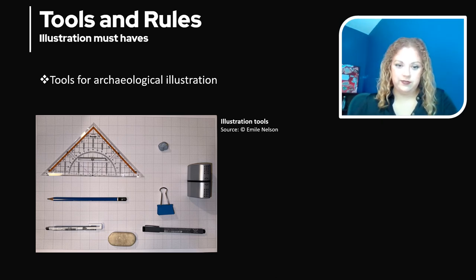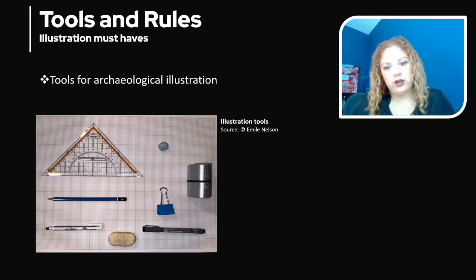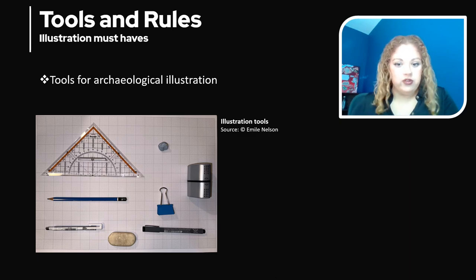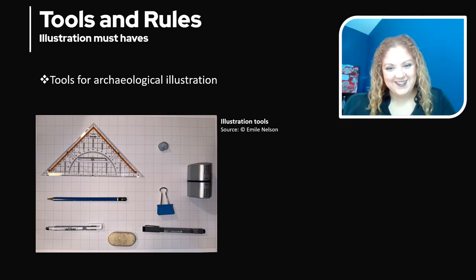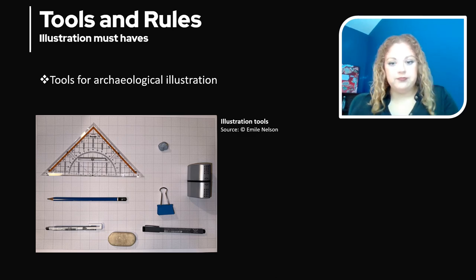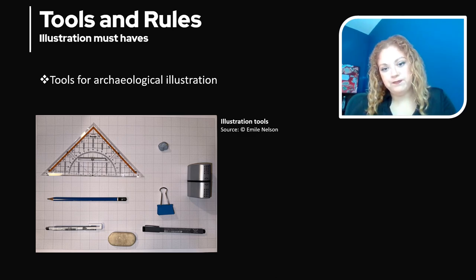Tools for archaeological illustration. Up here in the left corner, I have what is called a pearl set square. It's helpful for straight edges and it's helpful if you're trying to flip your profile without having to draw the whole thing over again, which I will show you next week when we get into ceramics. And then I have a 2B pencil, which is my favorite to use, and two different kinds of erasers.